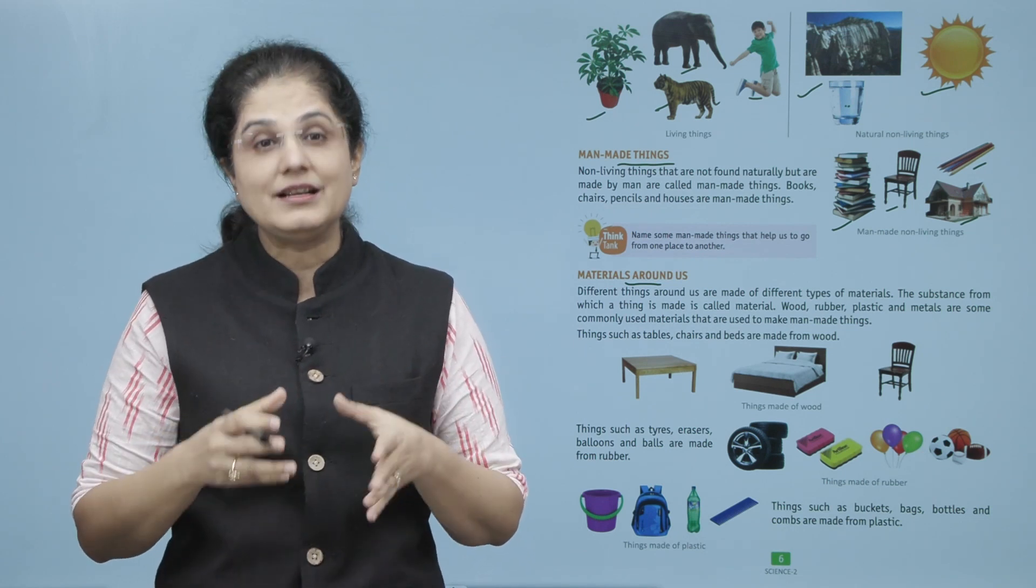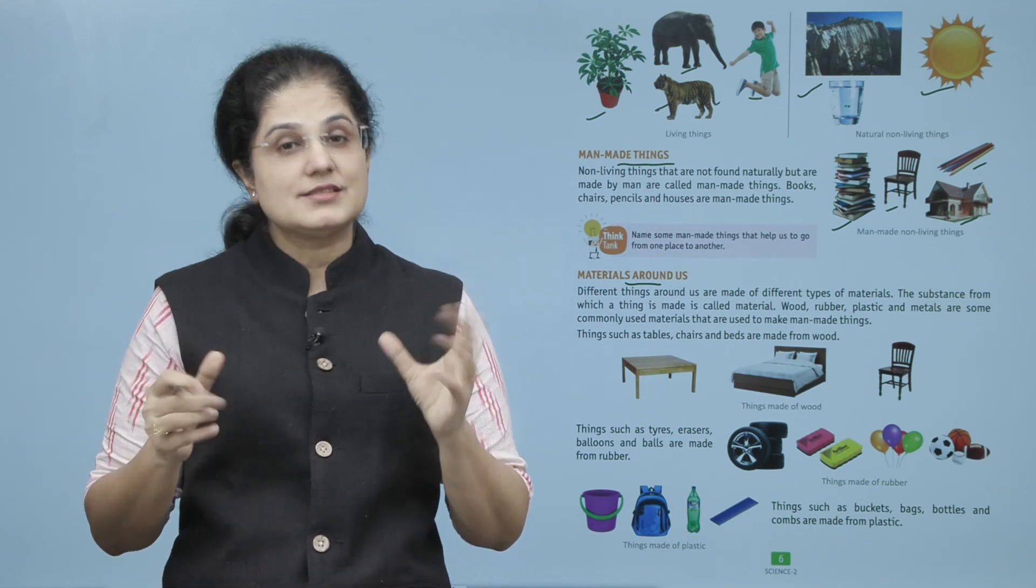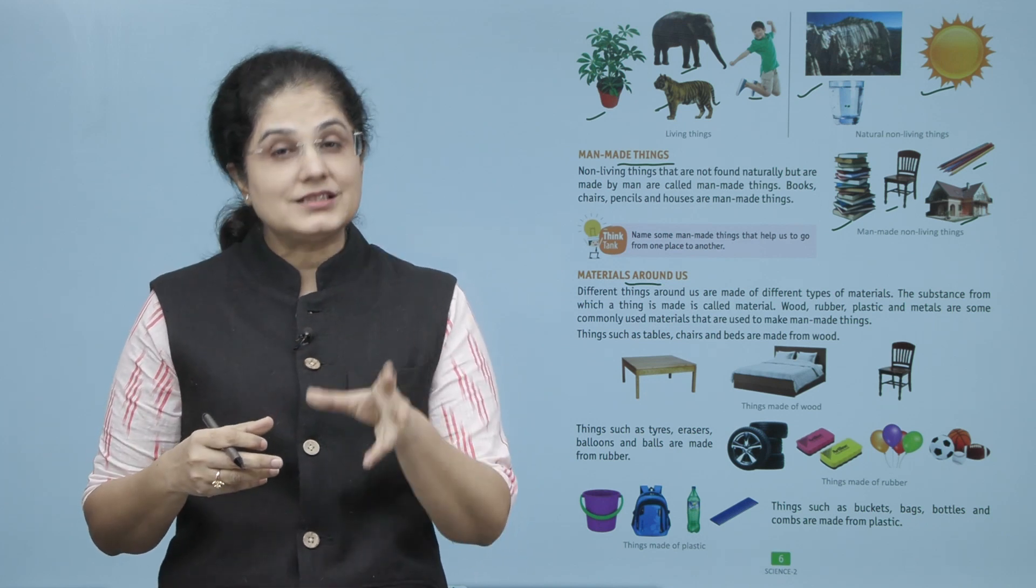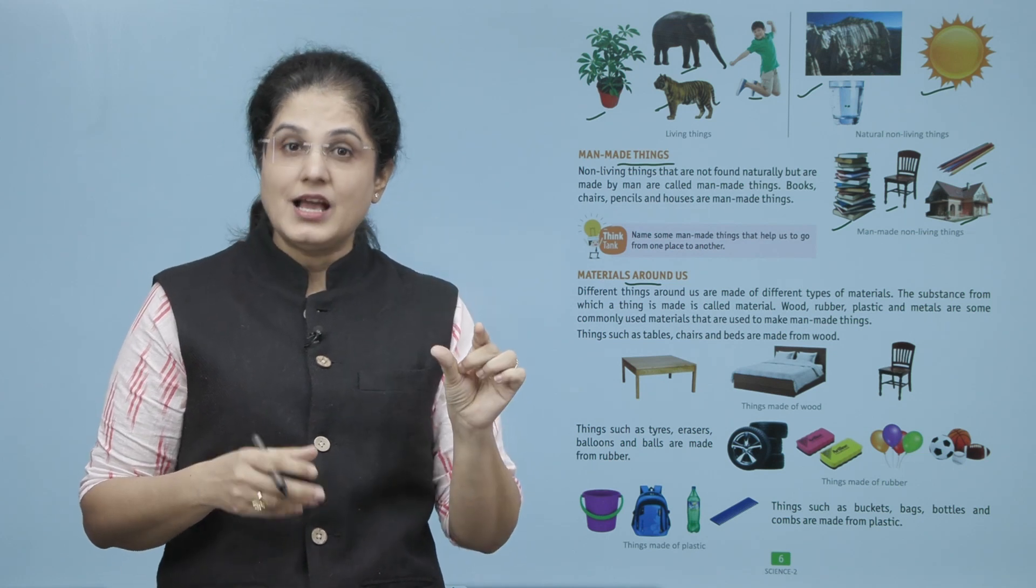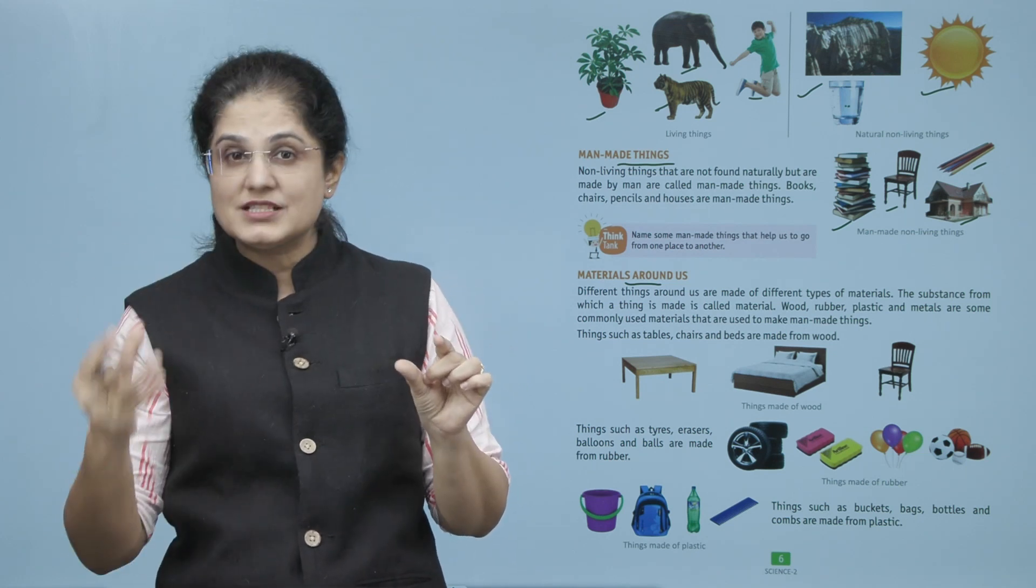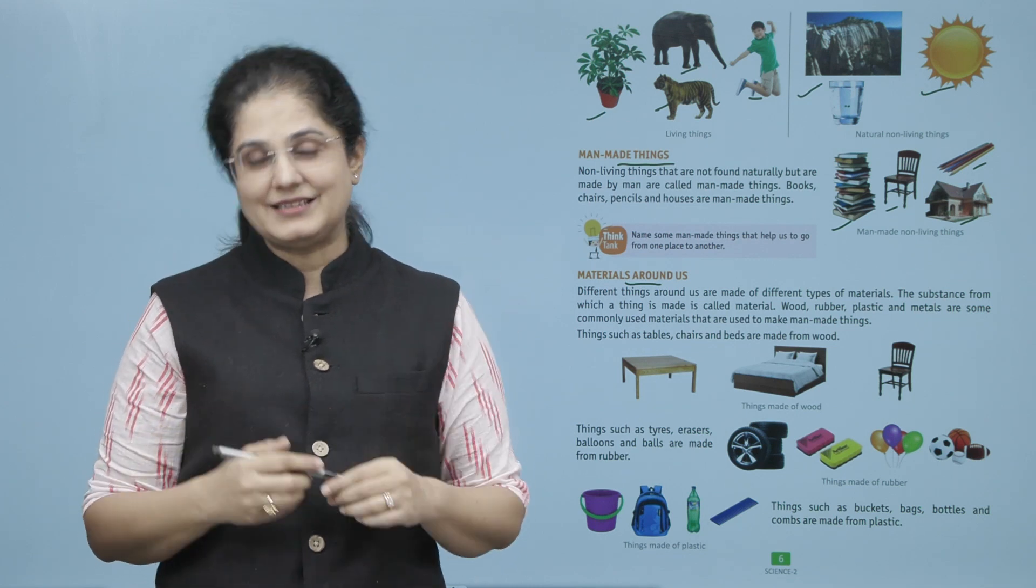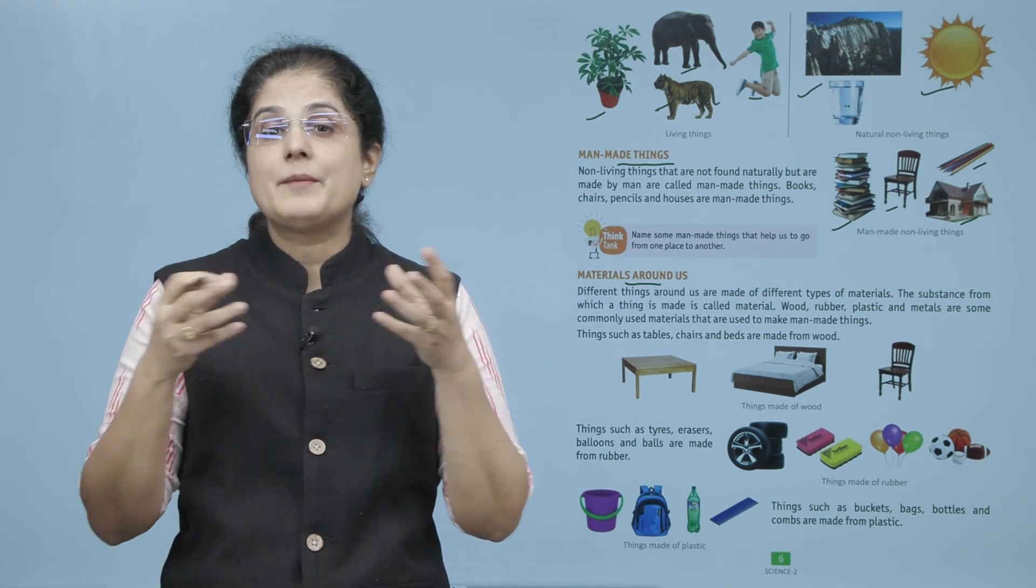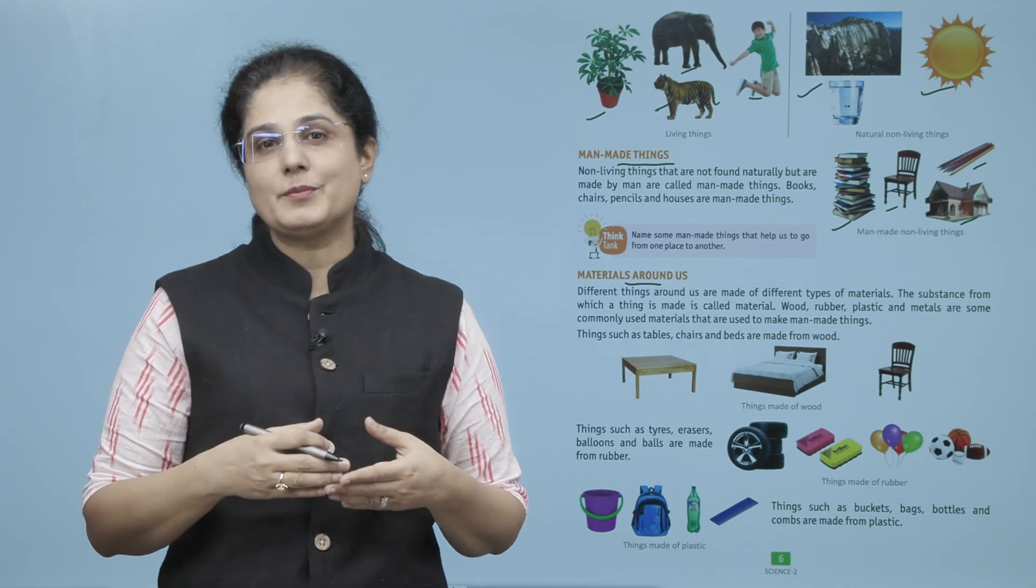Wood, rubber, plastic, and metals are some commonly used materials that are used to make man-made things. Jo hamare aas paas jitni hume alag-alag prakar ki chizhe nazar ati hai, yeh alag-alag material yani ki padarth se banti hai. To wo substance ya cheez jis se hum koi cheez bantate hai, usko hum material ya padarth kehte hai. Lakdi, rubber, plastic, ya kuch metals, yeh sare aise materials hain jo hum aam taur pe apni zindagi mein istamal karte hai.